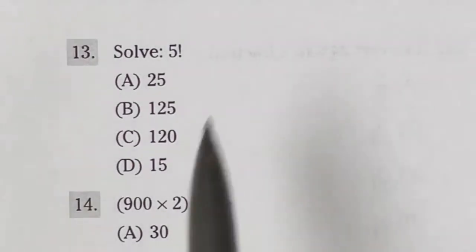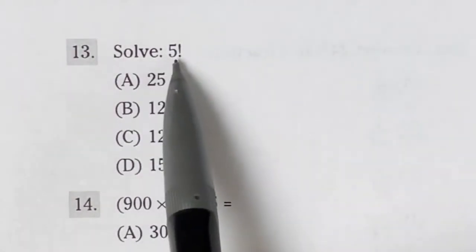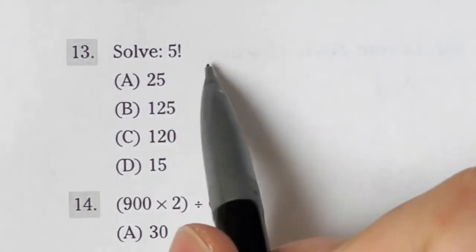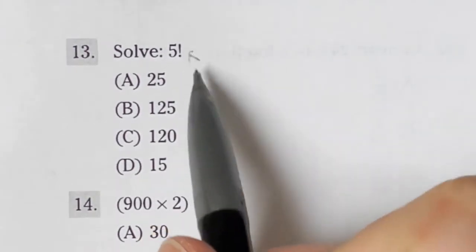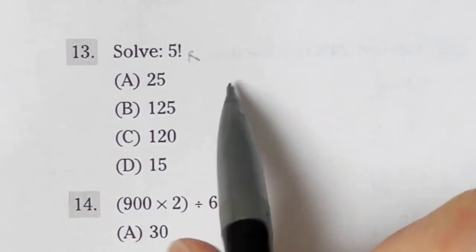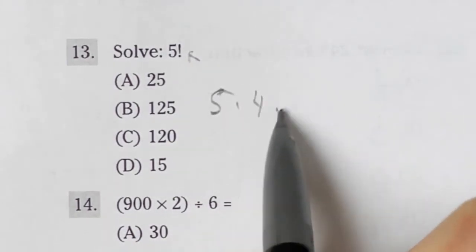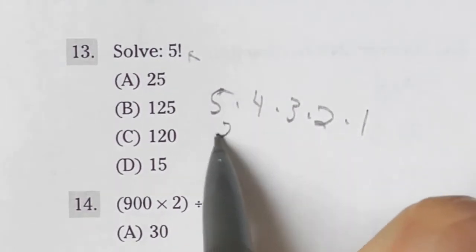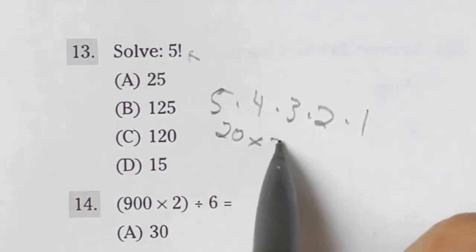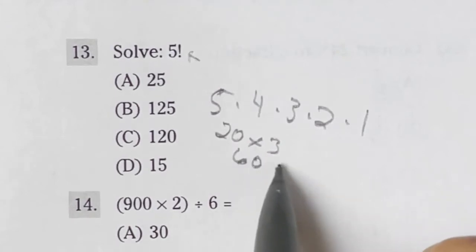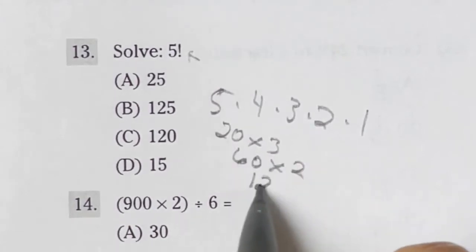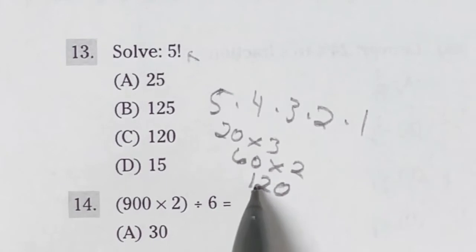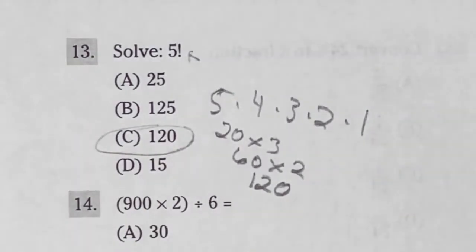Number 13 on the mathematical knowledge for the ASVAB says solve 5 factorial. So what this means, factorial, the little exclamation point here, it means you take that number and you multiply it by every number underneath it until you get down to the number 1. So if I do 5 times 4, that's going to give me 20. Times the 3 is going to give me 60. Times the 2 is going to give me 120. Then times 1 keeps me at 120. So our final answer here is C.